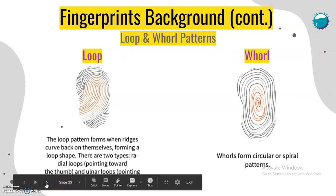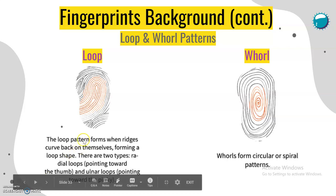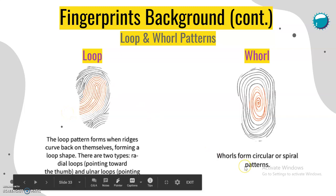The loop pattern forms when ridges curve back on themselves, forming a loop shape. There are two types: radial loops pointing toward the thumb, and ulnar loops pointing toward the pinky. You go in one way, loop around, and then come back out the same way you came in. Whorls form circular or spiral patterns — think about a whirlpool.